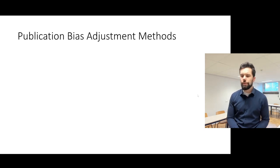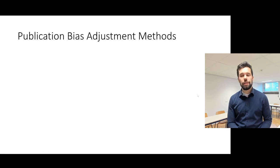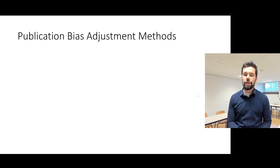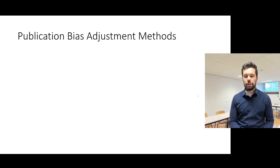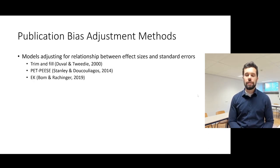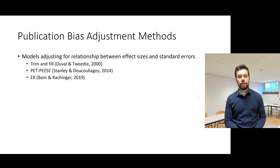During this conference, you may have already heard several brilliant researchers describing different methods for publication bias adjustment. ROBMA builds upon some of those methods, or their versions, and combines them together in accordance with the two main principles I mentioned. I divide them into two main categories: models adjusting for the relationship between effect sizes and standard errors, such as trim-and-fill, WEP-piece, and Egger's test; and models adjusting for selection of p-values, such as 3PSM and 4PSM, AK1 and AK2, or special cases such as p-curve and p-uniform.